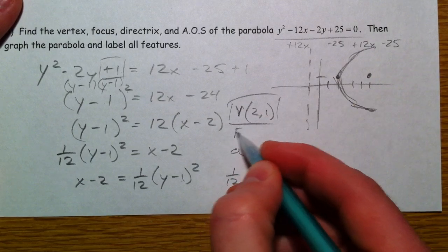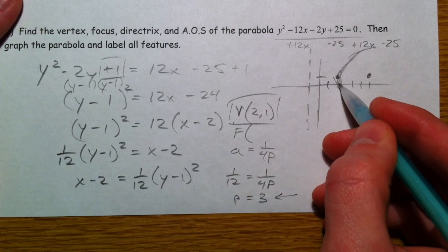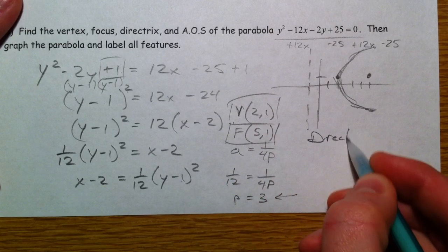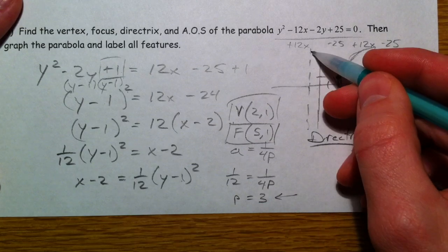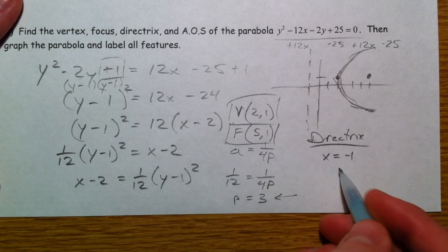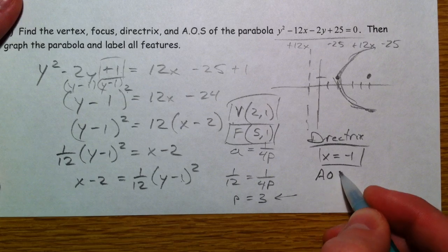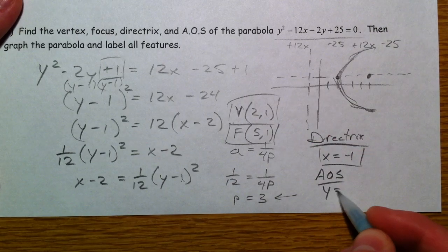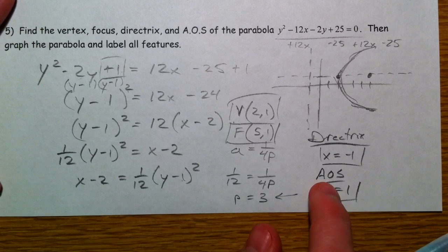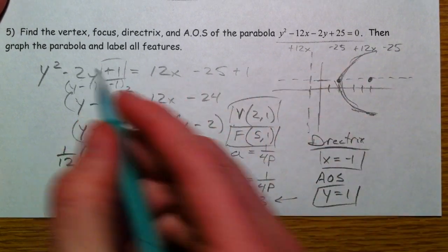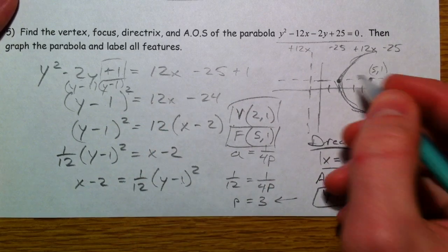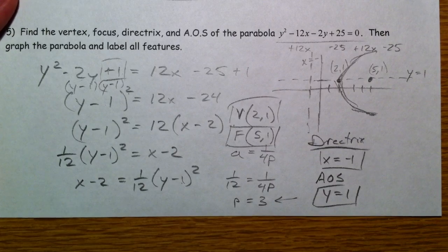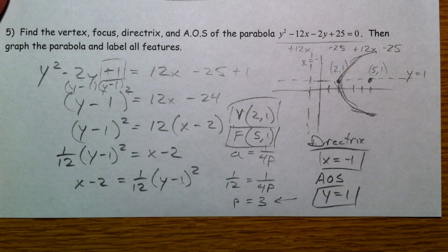So our vertex—focus is going to be 2, 3, 4, 5 comma 1. Directrix is going to be this vertical line, which is x equals negative 1. And our axis of symmetry is this line right here that's going to go straight through the center. And that's y equals positive 1. And there we have it. So we've graphed it. This is (5, 1), (2, 1), y equals 1, x equals negative 1. And there we have it. Your first parabola. Complete the square.